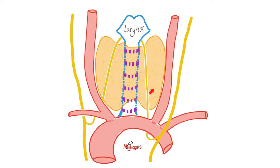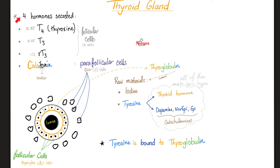Where's the thyroid gland? It's this beauty in your neck. The thyroid gland secretes four hormones: T4 — that's the main one; T3 — that's the most active one; reverse T3 — not active; and calcitonin, because it will weaken and decrease your calcium level in the blood. We'll talk about calcitonin in the next video.